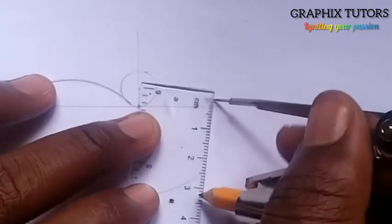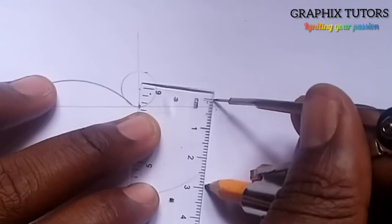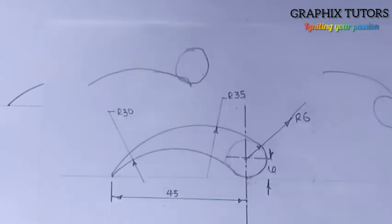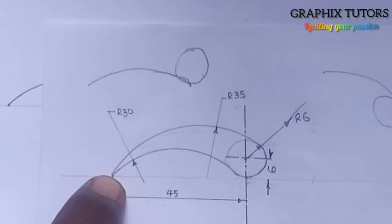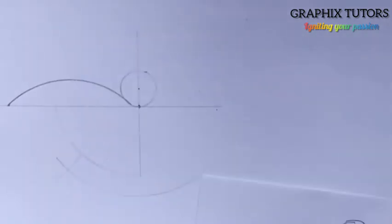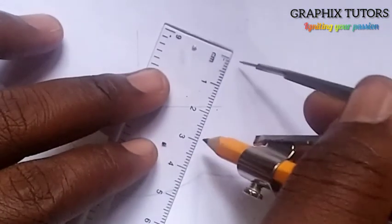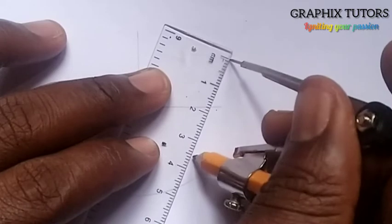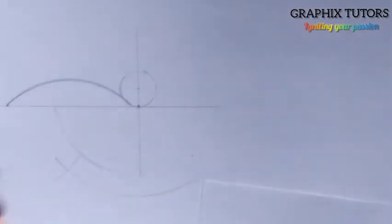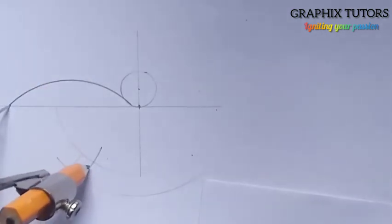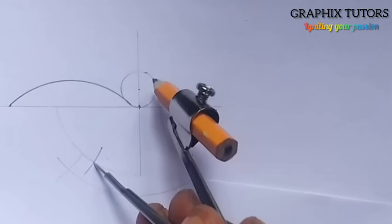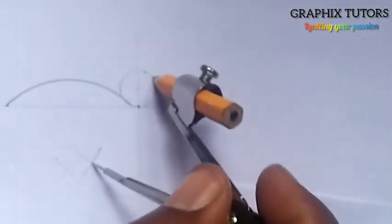From zero to 29 on my rule — I place the compass at the center of the circle and strike the arc at 29. For the other point, since the radius of that circle is zero, 35 minus 0 is 35. I measure 35 on my meter rule, place it at that point, and strike an arc that cuts here. I then gauge from that intersection to complete the arc.